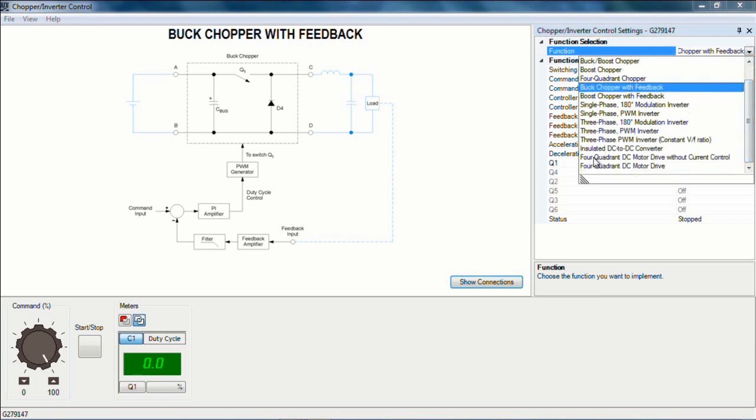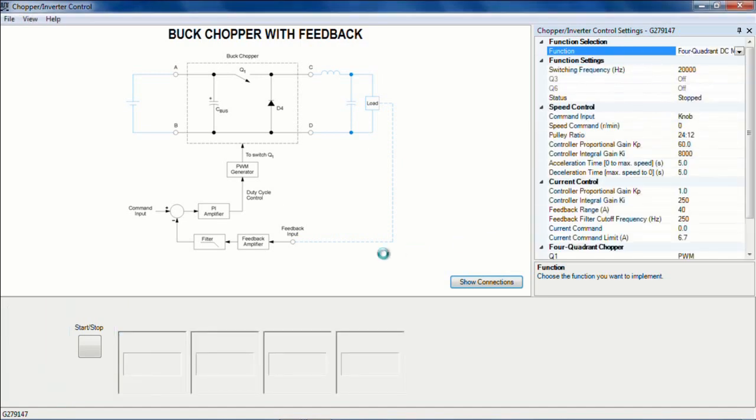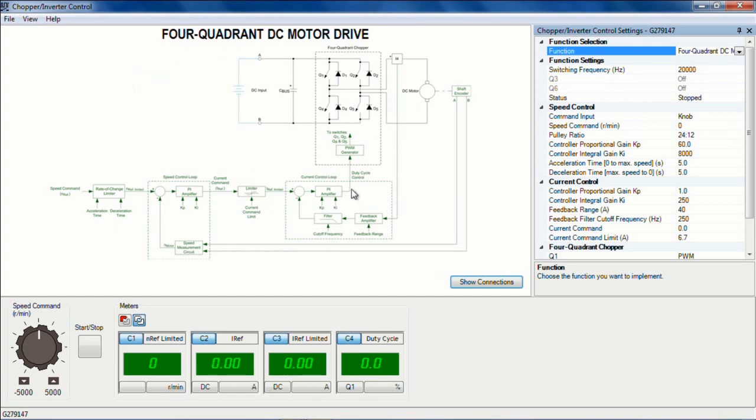I also have a four quadrant DC motor drive without current control and a four quadrant DC motor drive that would include the current control as well, which in fact is a PI that is controlling another PI in cascade mode.